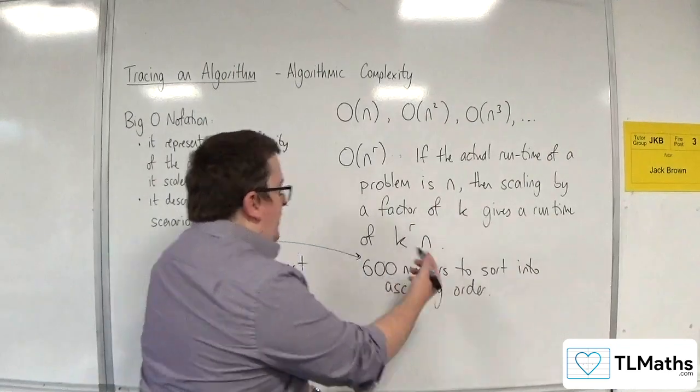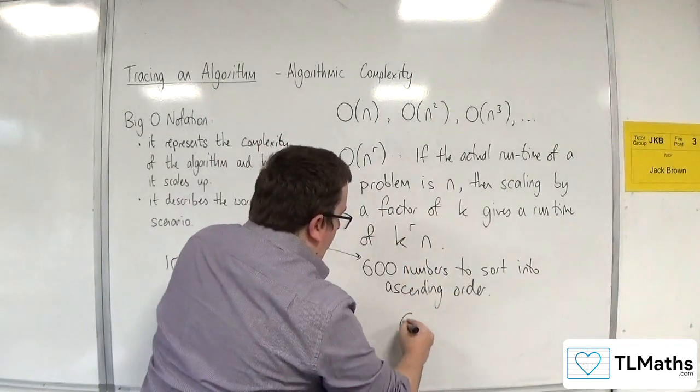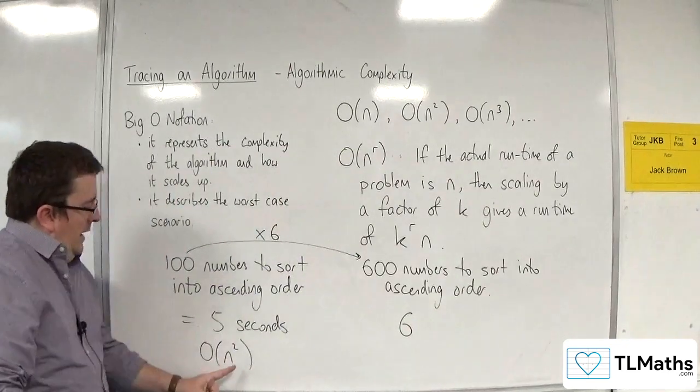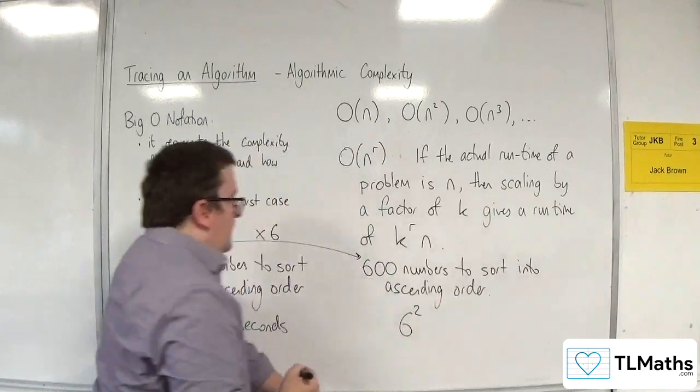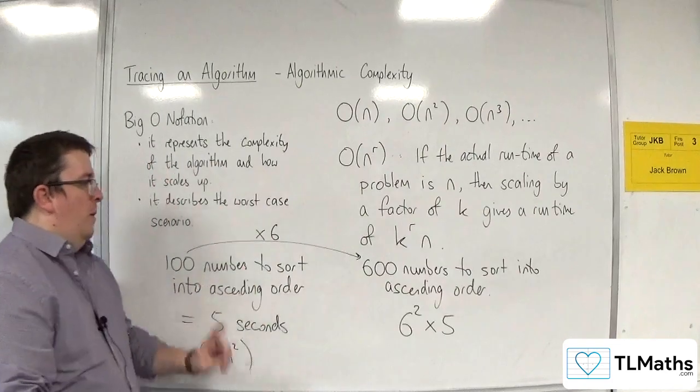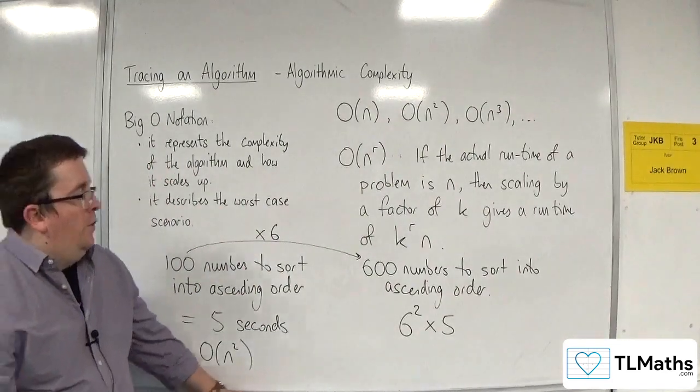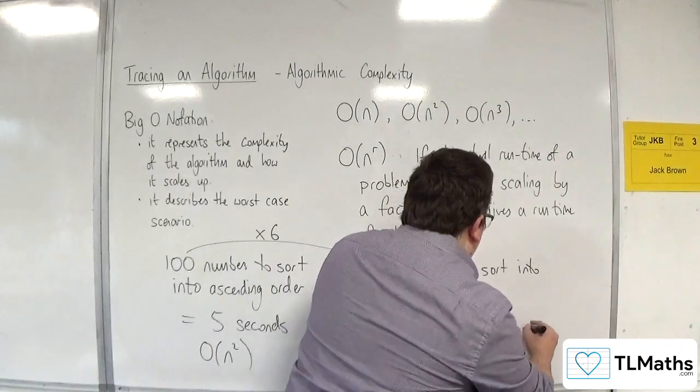It originally took 5 seconds. So the length of time that this will take will be, well, the factor here is 6. It's order of n squared, so that needs to be squared, times by the length of time that the original problem took. So you've got 36 times 5, which would be 180 seconds.